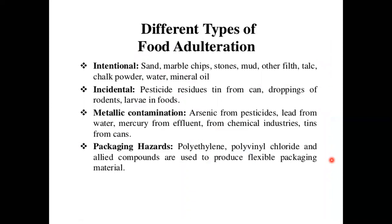There are different types of food adulteration: intentionally added, incidentally added, metallic contamination, and packaging hazards. Intentional food adulteration involves substances like sand, marble chips, stones, mineral oil, and water intentionally added. Incidental adulteration includes pesticide residues, droppings of insects or rodents and larvae in food. Metallic contamination involves metal particles like arsenic from pesticides, mercury from effluent, lead from water, and certain chemicals from industries. Packaging hazards involve materials like polythene, LDP, HDP, and polyvinyl chloride used for flexible packaging, which indirectly act as food adulteration.